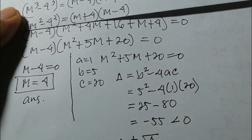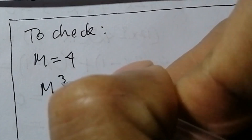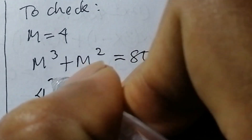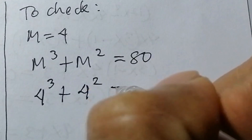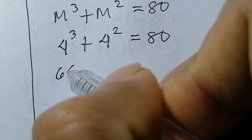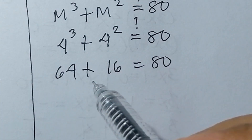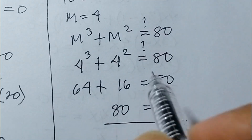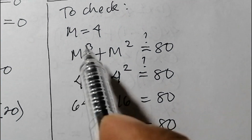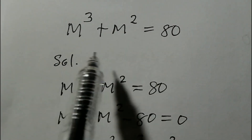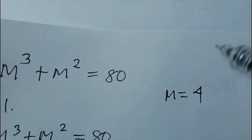Let us verify that m equals 4 satisfies the original equation. Using the original equation, m³ plus m² equals 80: substituting m equals 4 gives 4³ plus 4² equals 80. We get 64 plus 16 equals 80, which is indeed 80 equals 80. Both sides are equal, confirming that m equals 4 satisfies the given equation.